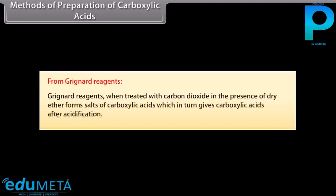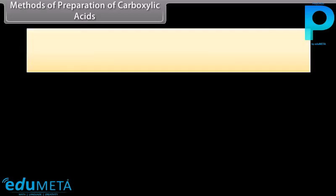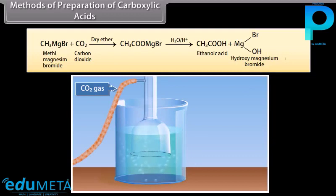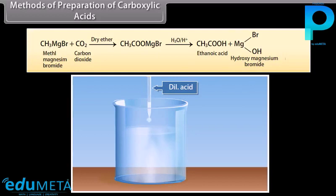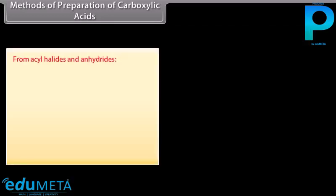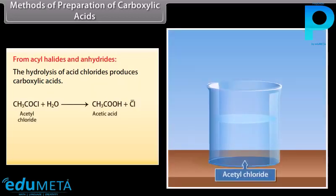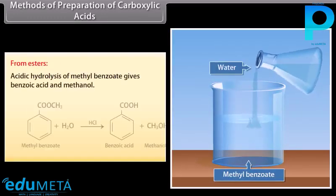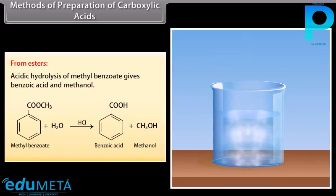From Grignard reagents: Grignard reagents, when treated with carbon dioxide in the presence of dry ether, form salts of carboxylic acids, which in turn give carboxylic acids after acidification. Methyl magnesium bromide reacts with carbon dioxide in dry ether to form a salt which gives ethanoic acid and hydroxyl magnesium bromide after acidification. From acyl halides and anhydrides: hydrolysis of acid chlorides produces carboxylic acids; hydrolysis of acetyl chloride produces acetic acid; hydrolysis of acetic anhydride also produces acetic acid. From esters: acid hydrolysis of methyl benzoate gives benzoic acid and methanol.